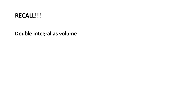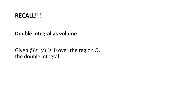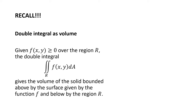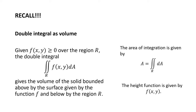Let's recall the notion of a double integral for the volume of a solid. Given a function f(x, y) ≥ 0 over the region R, the double integral of f(x, y) dA over R gives the volume of the solid bounded above by the surface given by the function f and below by the region R. In this double integral, the area of integration is given by the double integral of dA over R, and f(x, y) will be a height function.